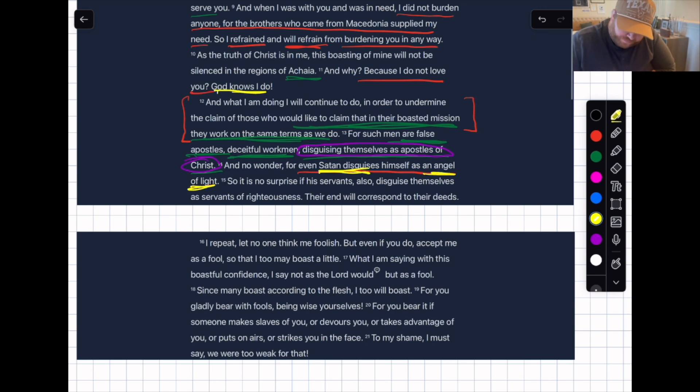And no wonder, for even Satan disguises himself as an angel of light. This is a big deal here. Let's pull out the yellow. What does Satan do? Disguises himself as an angel of light. For us to learn here is Paul's reminding us that the enemy tries to look good, but he's not. So we have to be aware.